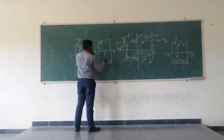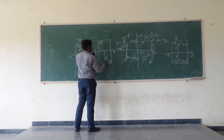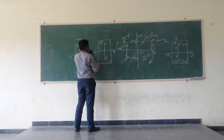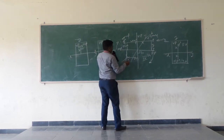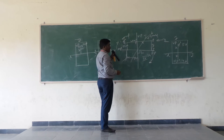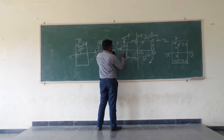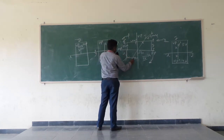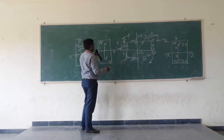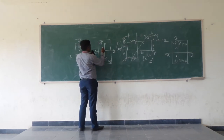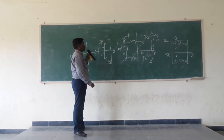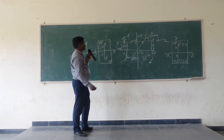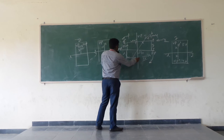When you draw the front view, it will be coming below the XY line, and it will be called S dash. The top view will be small s. The distances from the vertical plane and the horizontal plane for point S will be 25 mm each — 25 mm from the XY line, 25 mm from the horizontal plane, and 25 mm from the vertical plane.